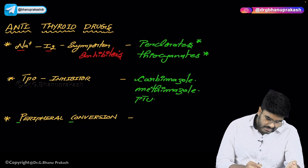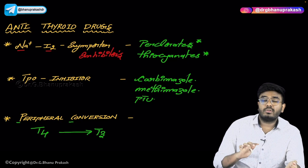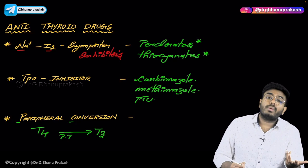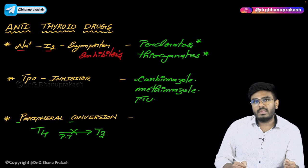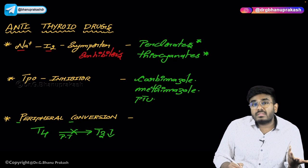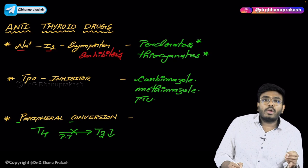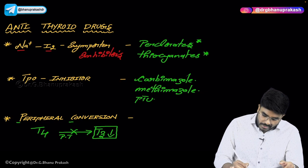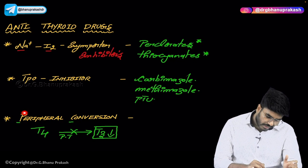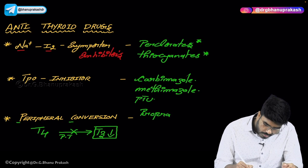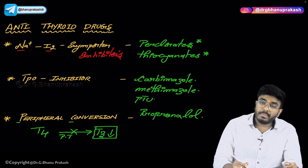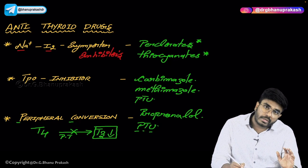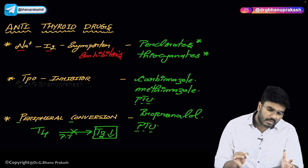Now let's discuss peripheral conversion. T4 (inactive form) is converted to T3 (active form) in peripheral tissues by the enzyme 5'-deiodinase. If we inhibit this step, T3 decreases, and since T3 is responsible for all thyroid actions, symptoms of hyperthyroidism can be reduced. Peripheral conversion is inhibited by propranolol (a beta blocker) — remember P4P: propranolol inhibits peripheral conversion. Propylthiouracil also inhibits both peripheral conversion and thyroid peroxidase.